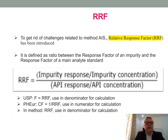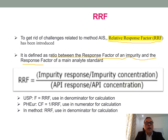To get rid of the challenges related to the AIS method, the Relative Response Factor, i.e. RRF, has been introduced. It is defined as the ratio between the response factor for an impurity and the response factor of a main analyte standard. USP uses a Relative Response Factor, and it is used in the denominator for calculation. Pharma Europa uses a Correction Factor, which equals 1 divided by RRF, and the Correction Factor is used in the numerator for calculation.